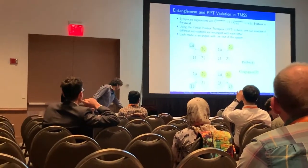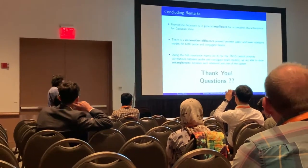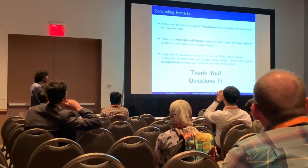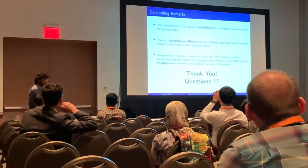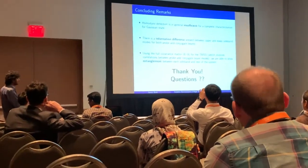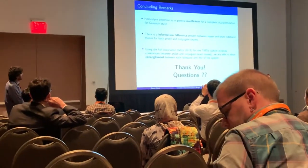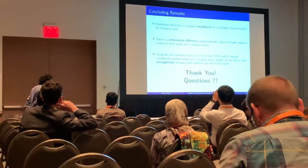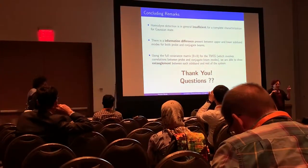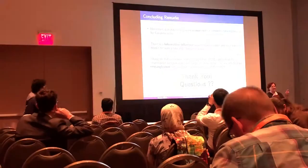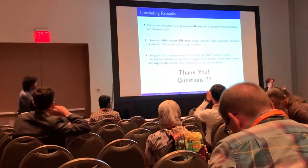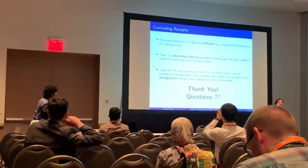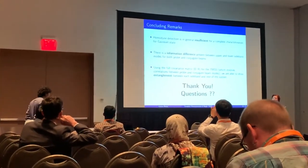In summary, I have shown that homodyne detection is in general insufficient for complete characterization of Gaussian states. I have shown that there is an information difference between the upper and lower sidebands for both the probe and conjugate beams. I constructed the two-mode bipartite state complete covariance matrix and showed that there is entanglement in the system.